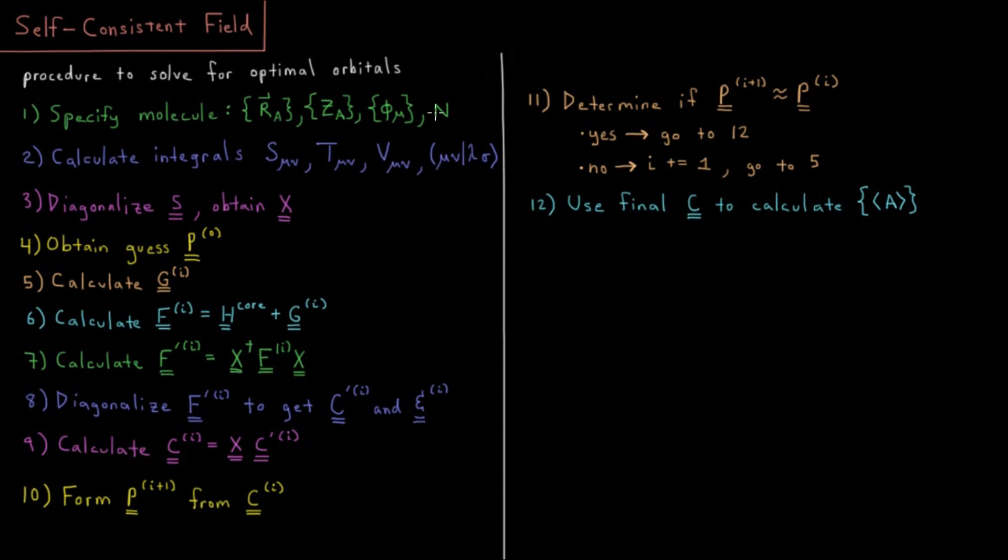And then additionally, how many electrons do we have? In principle, you also have to specify how many spin-up and spin-down electrons you have. But for now, we're just assuming we're doing restricted Hartree-Fock where we have an even number of electrons and all we need to specify is the total number of electrons.